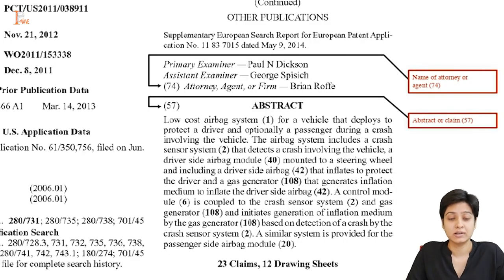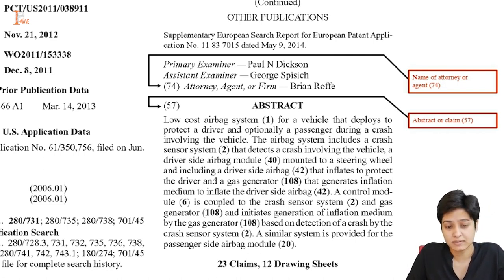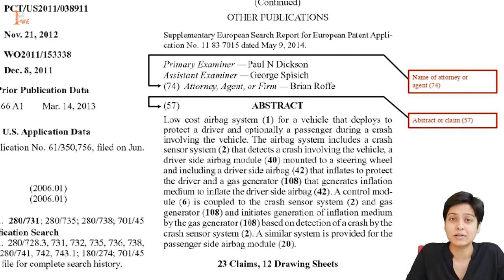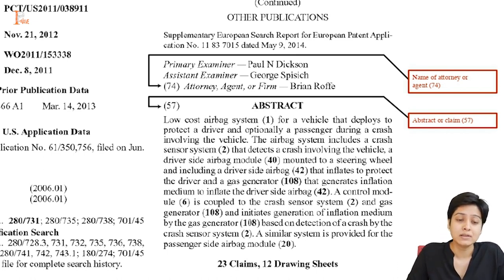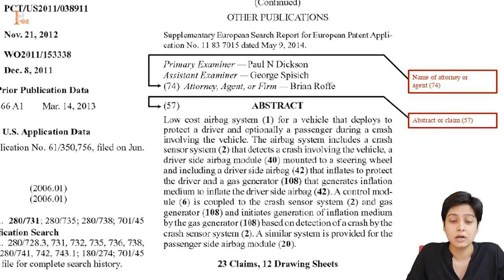The first part that you see on your screen is the abstract. The low-cost airbag system for vehicles is a safety feature designed to protect the driver and, if applicable, a passenger during a crash. The system includes a crash sensor system that detects collisions involving the vehicle. For both the driver and passenger seats, separate air modules are mounted, each equipped with an airbag and a gas generator. When a crash is detected, the control module activates the gas generator, which generates an inflation medium to quickly inflate the vehicle's interior, creating a protective cushion reducing the risk of severe injuries. The system is engineered to be cost-effective without compromising on crucial safety standards.